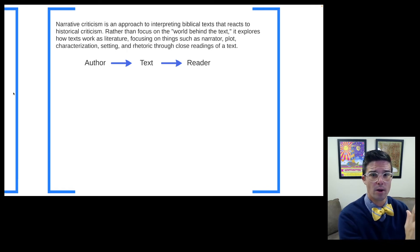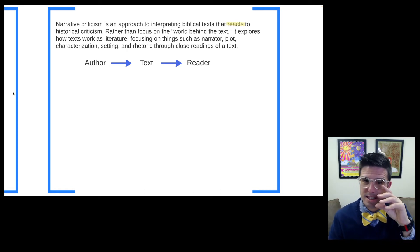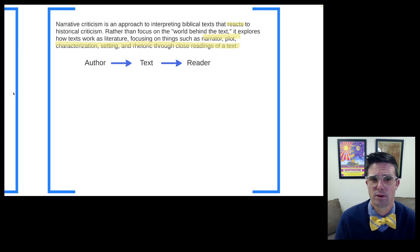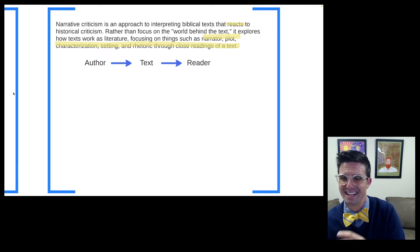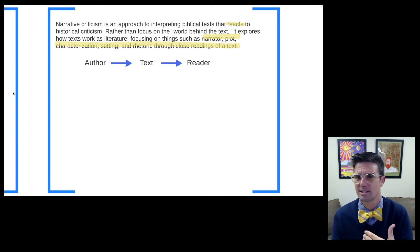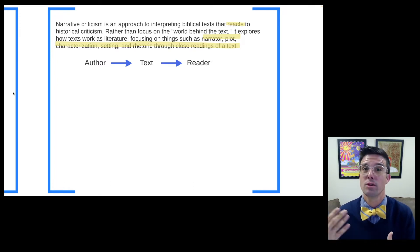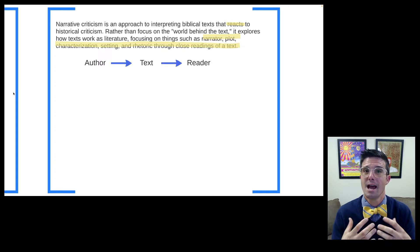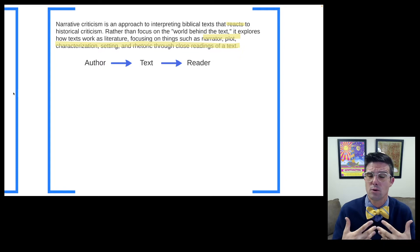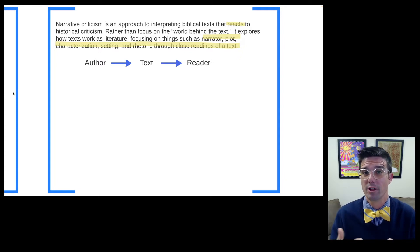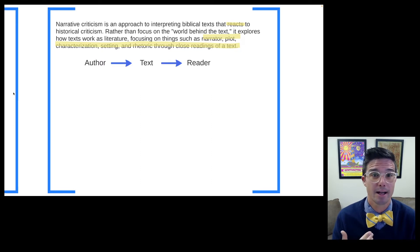All of those approaches are thinking about what is going on behind the text, whereas narrative criticism is going to react to historical criticism — moving our emphasis not from what comes behind the text, but what we actually find in the text in its final form. So it is less concerned with who the actual author is or who the actual audience is in the first century, and more focused on who we are as readers and how the text presents itself as a narrative, thinking about narrator, plot, character, setting, and rhetoric.